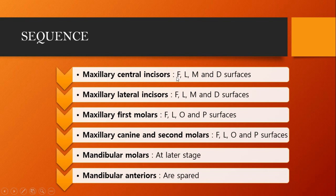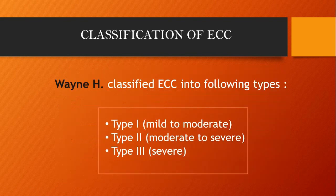In the maxillary central incisors, the facial, lingual, mesial, and distal surfaces are involved. In the molars, the facial, lingual, occlusal, and palatal surfaces are involved. This is the exact sequence of how early childhood caries progresses.